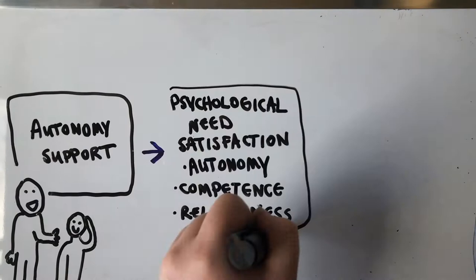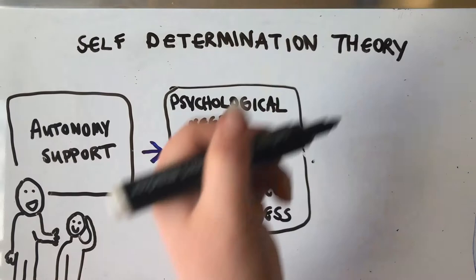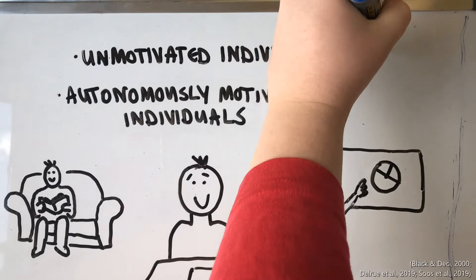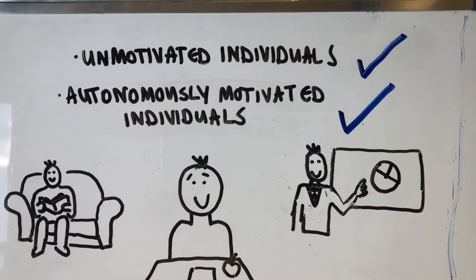As suggested by self-determination theory and supported by research, this is because autonomy support satisfies psychological needs in an individual which are inherently motivating within themselves. Autonomy support is beneficial for unmotivated individuals, those who are already autonomously motivated, and these impacts on motivation have been shown to generalise to other situations.